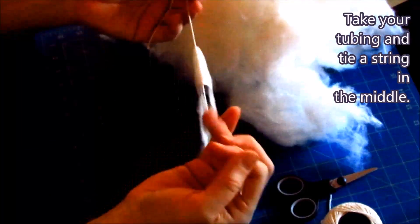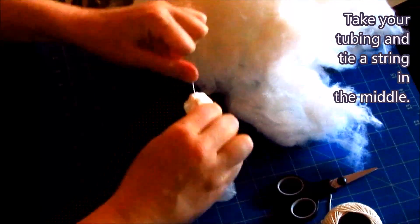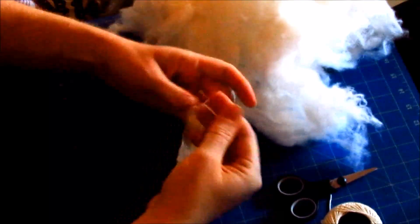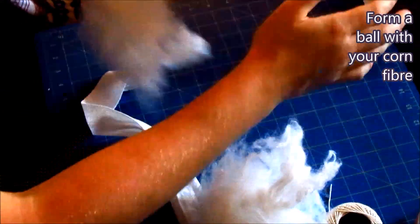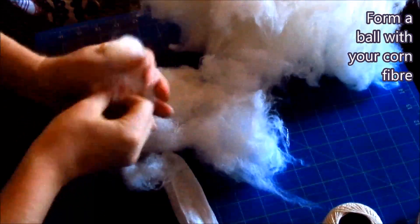Take your tubing and tie a string in the middle first. Then form a ball with your corn fiber. I like to roll it really tight and make it really strong so I have a firm head.